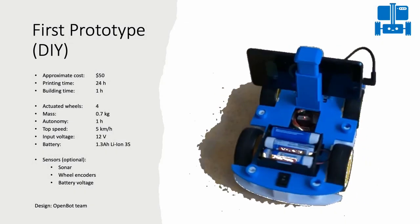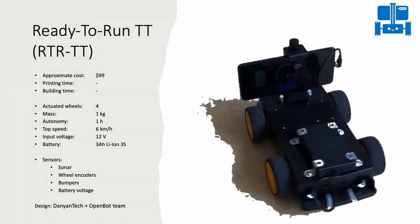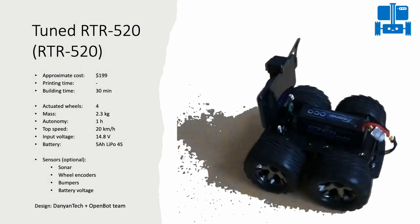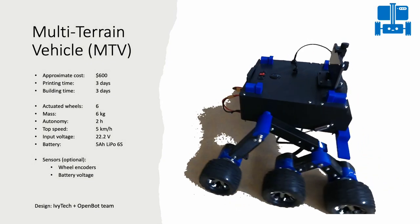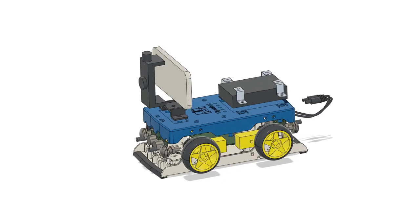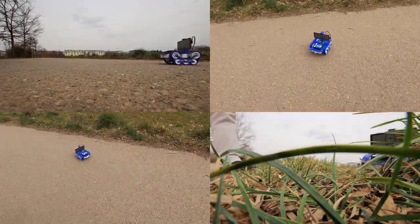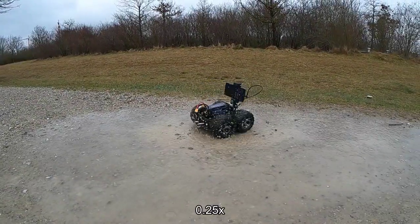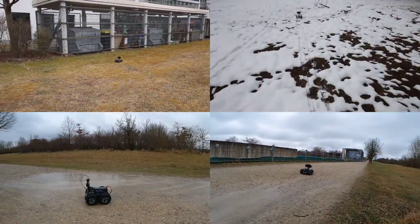We now provide a range of new vehicle designs, including multi-terrain vehicles, allowing the OpenBot framework to be deployed in a wide variety of environments, both indoor and outdoor. You can either decide to build your own robot body or get one of our ready-to-run vehicles. Extending the OpenBot framework to outdoor environments paves the way for exciting new applications in a wide variety of fields, such as sports, exploration, or package delivery.